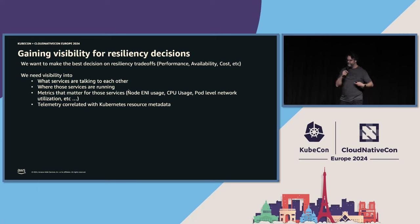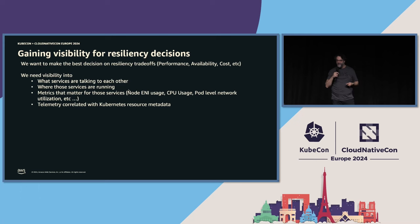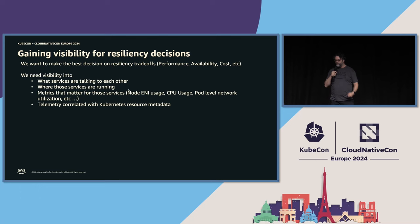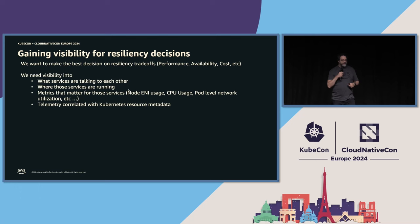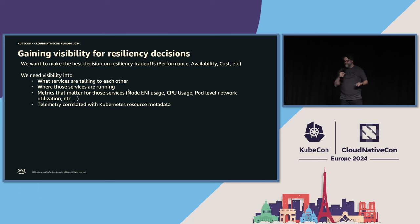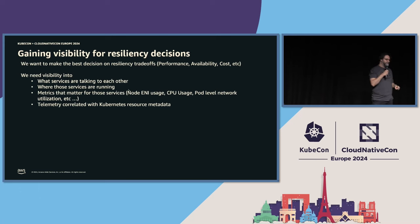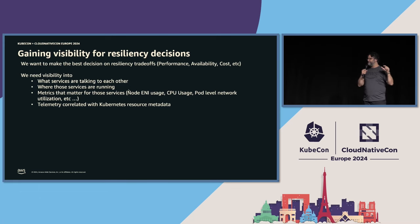Gaining visibility for resiliency decisions means making the best decision on resiliency trade-offs. We need visibility into what services are talking to each other, where those services are running, and the metrics that matter — latency, cost, CPU usage, pod-level networking. That telemetry has to be correlated to Kubernetes resources so I know what is talking to what in a Kubernetes context with resources and metadata.